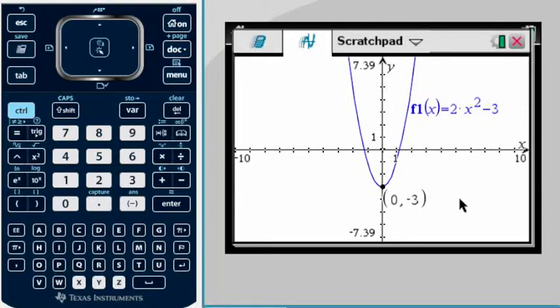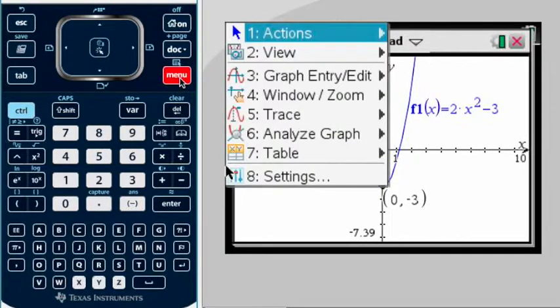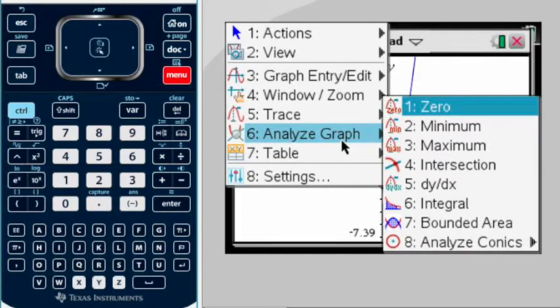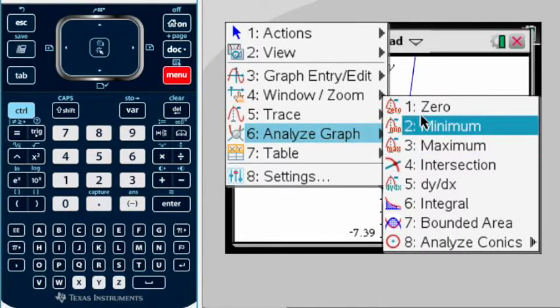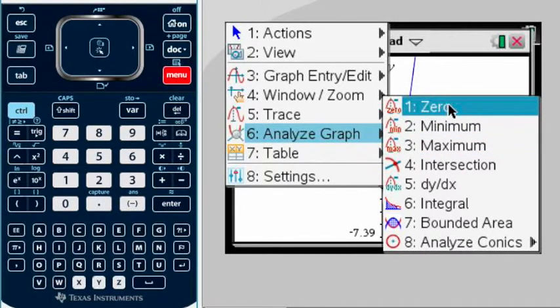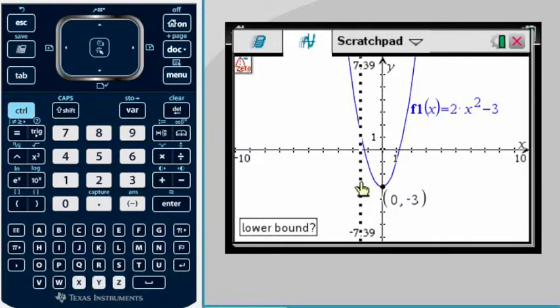In the same problem I should be able to find zeros. I can tell that my problem has two zeros right here, two x-intercepts, which is exactly the same or two roots. So we're going to go again to menu, we're going to go to Analyze Graph, and then you can tell that zero is the first option.